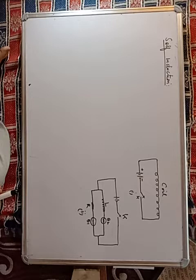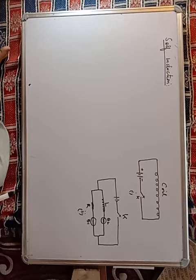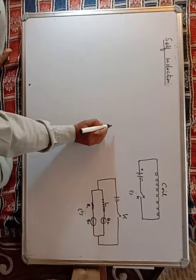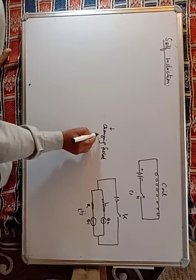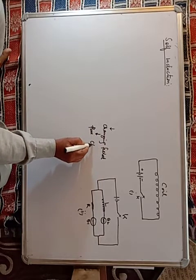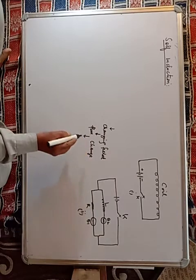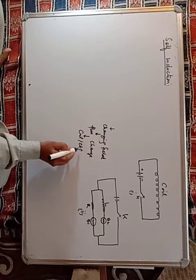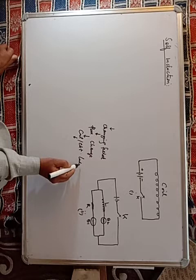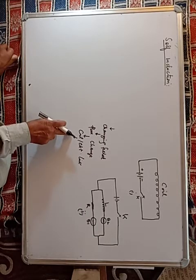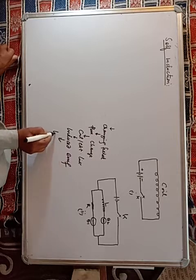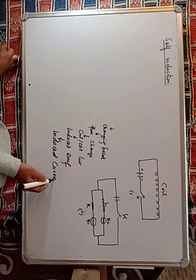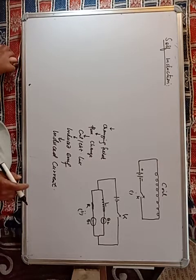So what happens in self-induction? When the current flowing through a coil increases or decreases — that means changes — the increasing or decreasing current produces a changing magnetic field. When the field changes, the flux also changes. This changing flux, if it links with another coil or circuit, then an induced EMF is produced, which produces an induced current. This is known as electromagnetic induction.